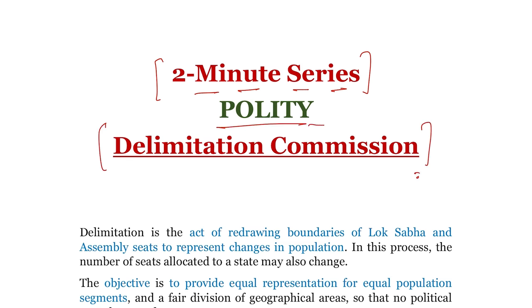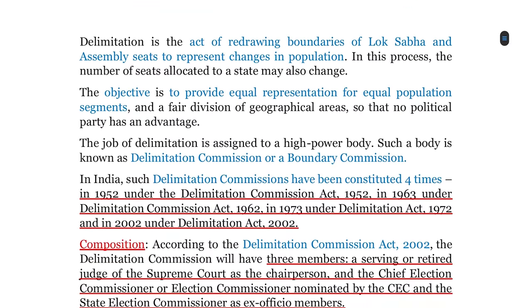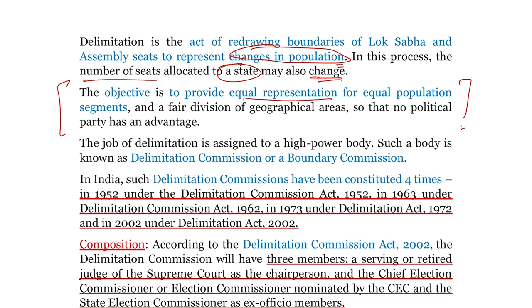Delimitation क्या होती है? Indian Polity के context में बात करें तो यह एक act है of redrawing boundaries of the Lok Sabha and assembly seats to represent changes in the population. अगर किसी area में किसी प्रकार का population change आता है with respect to other areas, तो वहाँ पर equal representation रहे, इसलिए Delimitation की process carry out की जाती है। इस process में जो number of seats allocated होती है किसी भी state को Parliament में, वो भी यहाँ पर change हो सकती है। Simple सा objective है कि equal representation provide की जा सके for equal population segments और एक fair division हो of the geographical areas।